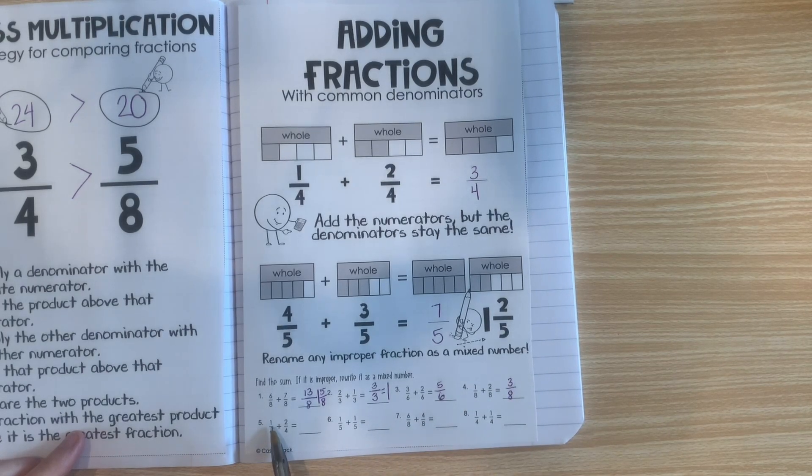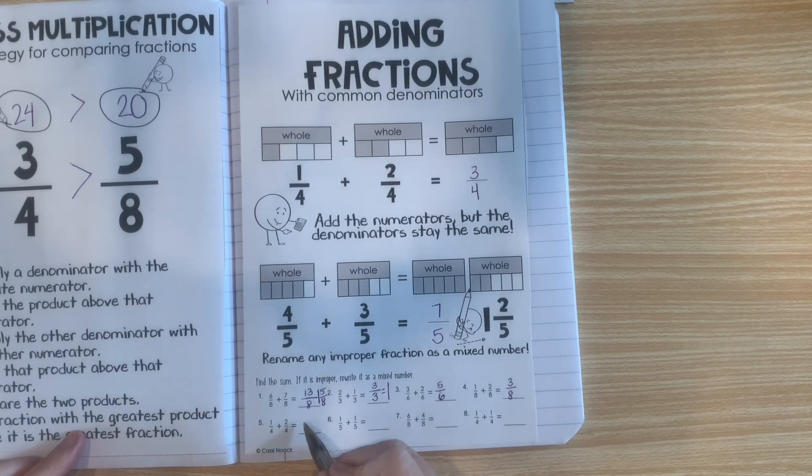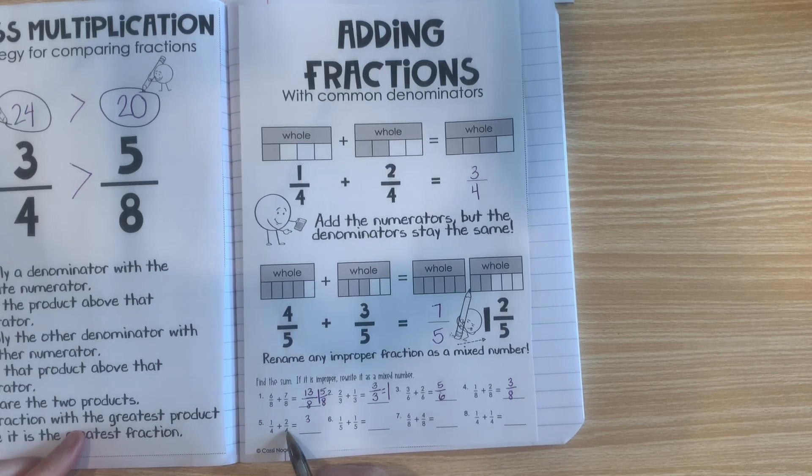Alright, let's do another one. 1 plus 2 is 3. And our denominator stays the same. 3 fourths.